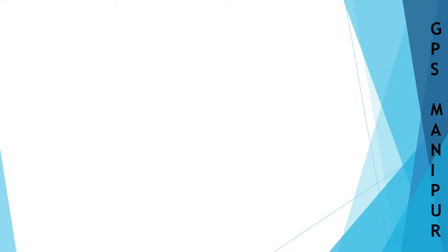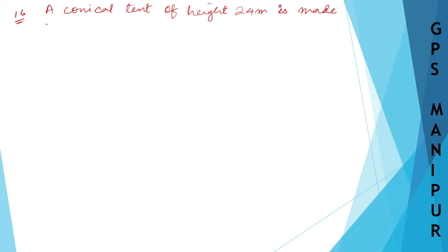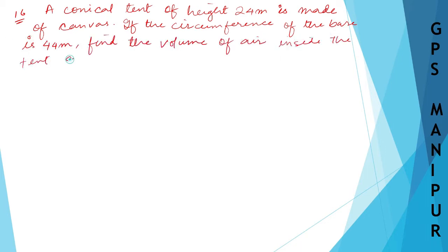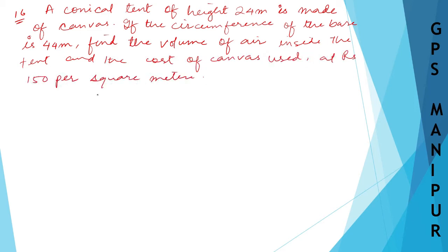We are doing exercise 2.3, question number 16. Let me write down the question first. So here is our question — let us write down the solution. The question says: a conical tent of height...